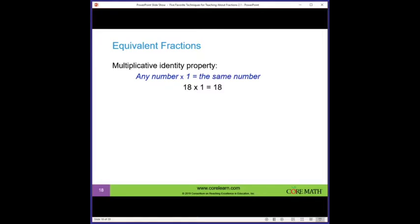Now, equivalent fractions. I want to talk about that here in a couple of different ways. First, I want to point out the idea of how we make equivalent fractions. This is built on whole numbers. I just first remind you of the multiplicative identity property. You may not remember the name of it, but the idea is pretty clear: any number times one equals the same number. So 18 times one equals 18.